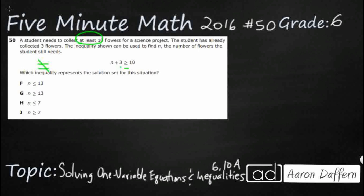So there are two different ways we could solve this, and we can start with the slower version first. Let's just take these two numbers here — 13 and 7 — because we've got two different options: n is greater than or equal to 13 or less than or equal to 13, then the same thing with 7. Let's see what happens if we put 13 in, replacing n, and see what we get. So we're going to get 16 is greater than or equal to 10.